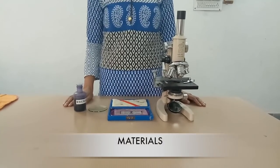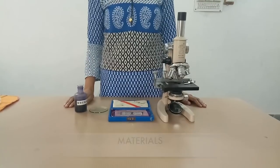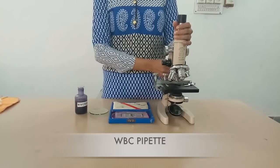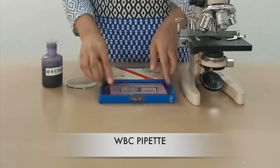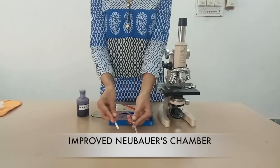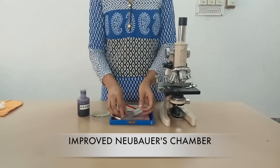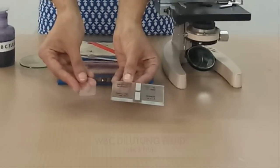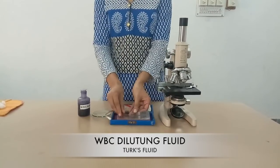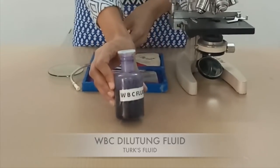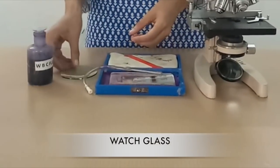Starting with materials, for WBC count we require microscope, WBC pipette - here is the WBC pipette, improved Neubauer chamber and coverslip, WBC diluting fluid also known as Turk's fluid, and watch glass.